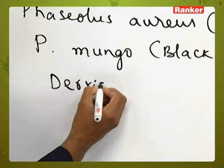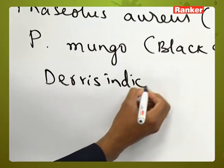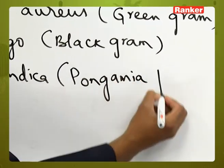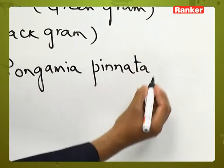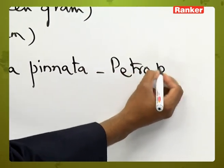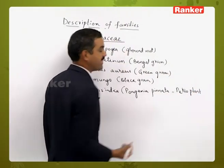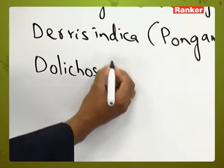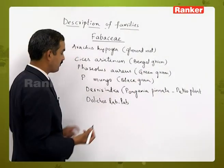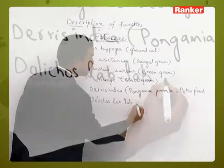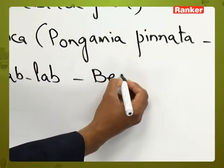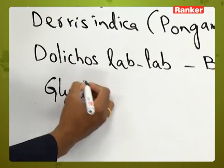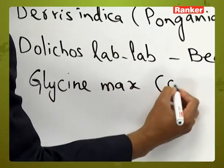Derris indica, otherwise called as Pongamia pinnata, which is simply called as the petro plant and has medicinal value. And Dolichos lablab, where the fruit of this plant is used as a vegetable — we generally call it bean. Glycine max, common name is soya bean.